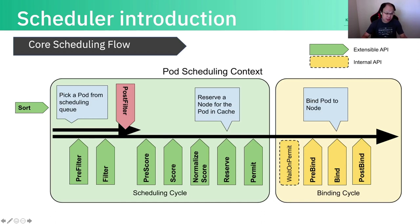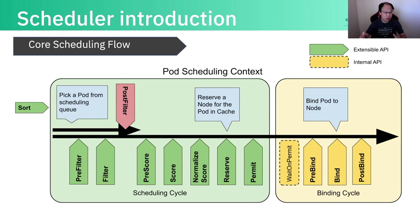What about the negative path? What if in the filter phase no single node can fit for the pod? We will go to the post-filter phase. By default we have the preemption plugin, which semantically tries to preempt lower-priority pods to make room for the incoming pod. If it succeeds, meaning we can find a node to serve the pod by preempting some victims, we will set the pod status nominated node name on the pod, and then put it back to the queue. Because we cannot immediately assign the node name since the victim pods are still being deleted, there should be a grace period. This is the basic core scheduling flow.